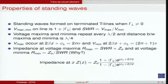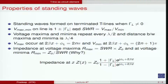The range of standing wave ratio is between 1 and infinity. When gamma_L equals 0, SWR equals 1. When |gamma_L| becomes 1 — for open-circuited or short-circuited loads — SWR goes to infinity. For passive transmission lines, the magnitude of the reflection coefficient must be between 0 and 1: 0 corresponding to no reflection, 1 corresponding to complete reflection.